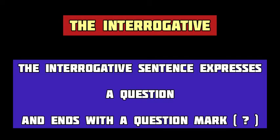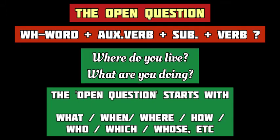Up next, we have the interrogative sentence. To interrogate or interrogation means asking questions. So, an interrogative sentence expresses a question and it ends with a question mark. In English grammar, there are two types of interrogative sentences: the open question and the closed question. The open question cannot be answered in yes or no and it starts with a question word. An open question may start with a WH word such as what, when, where, how, who, which, whose, etc. The structure of the open question is WH word followed by the auxiliary verb and then the subject followed by the principal verb.